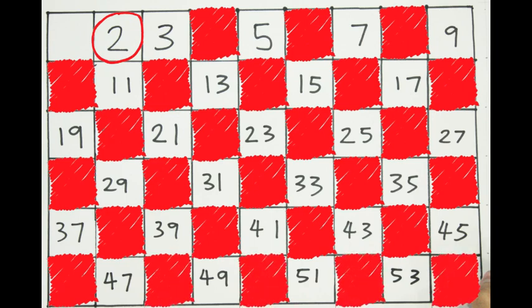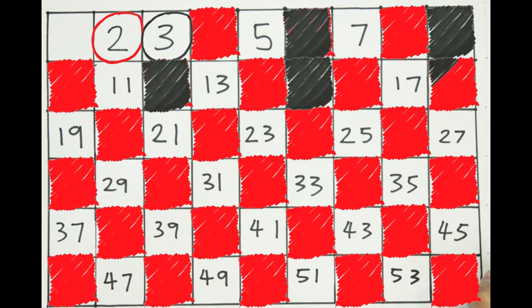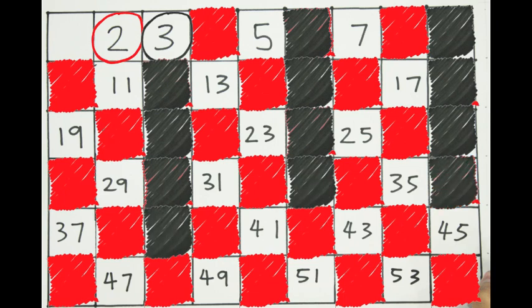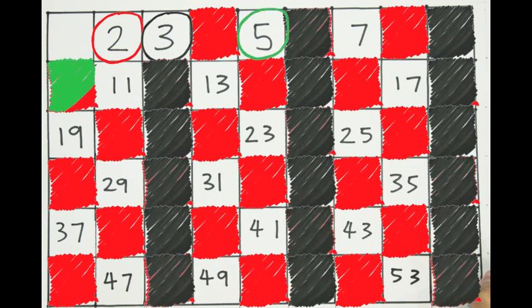All of these numbers have a factor of 2. Therefore, they cannot be prime numbers. We then move on to the next lowest number, which is not yet crossed off, which is 3. We then repeat our method of crossing out every multiple of 3 in the table, 6, 9, 12, 54.